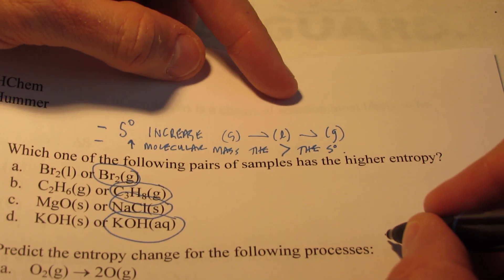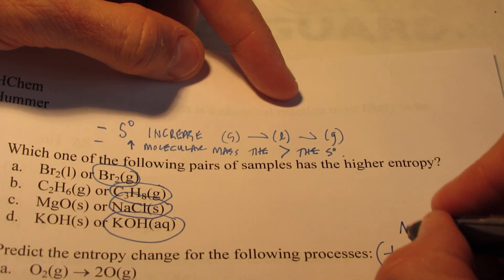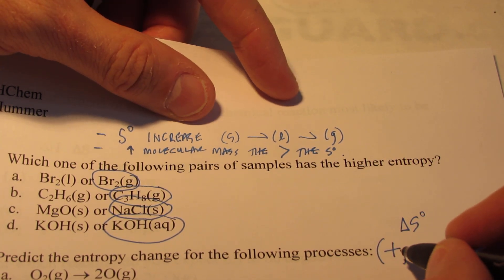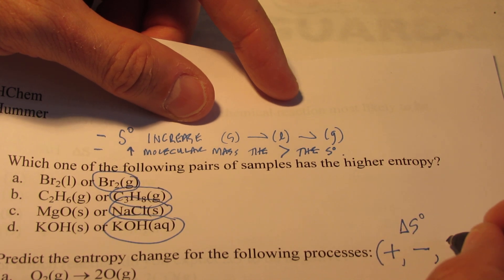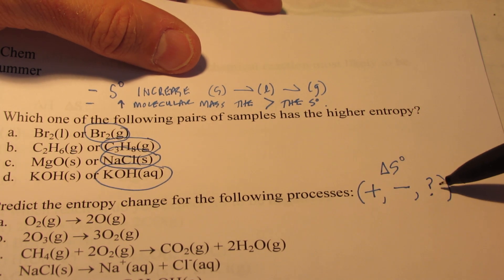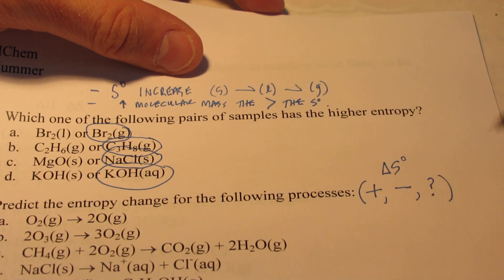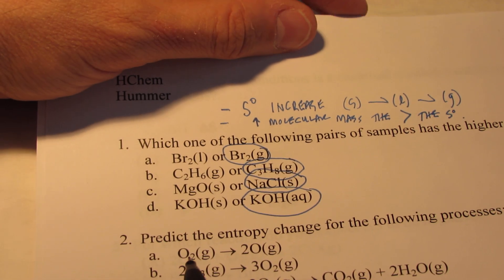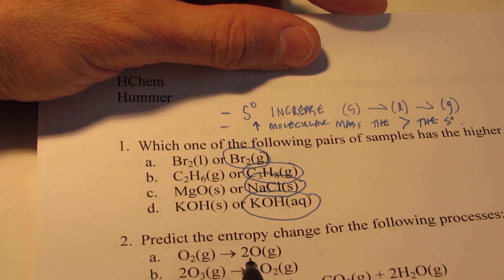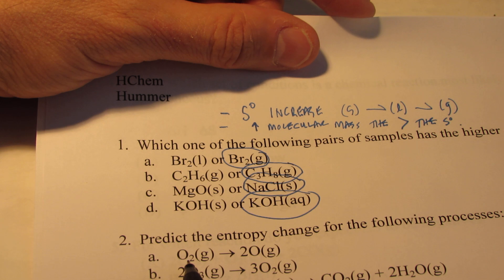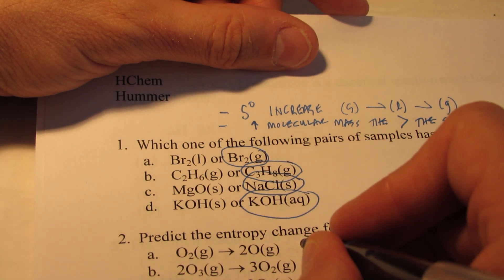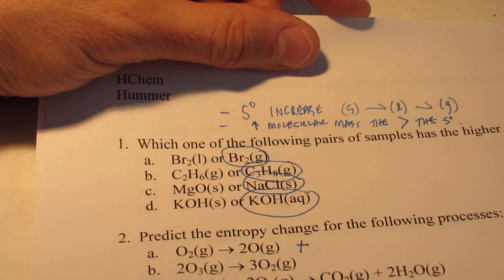Let's predict the entropy change for the following processes. So we're going to choose from either a positive entropy change, so triangle S, delta S is change in entropy. So a positive entropy change, meaning it gets more disordered. Negative, or for this example, we're going to put a question mark, meaning we need a little bit more information before we're able to determine that. So here we go. 2A. We have one mole of gas on this side, and we have two moles of gas on this side. So this is oxygen atoms. This is molecular oxygen. Two moles of gas would have a greater disorder than one mole of gas. So I would say that delta S for this reaction would be positive.